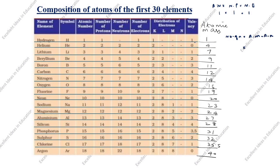For hydrogen, atomic mass is 1, atomic number is 1, so neutrons equal 0. For helium, atomic mass is 4 minus atomic number 2, so it comes to 2. For lithium, atomic mass is 7 minus atomic number 3, it comes to 4.